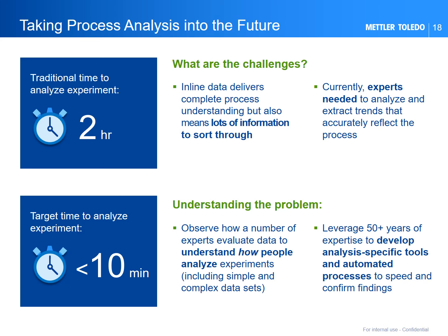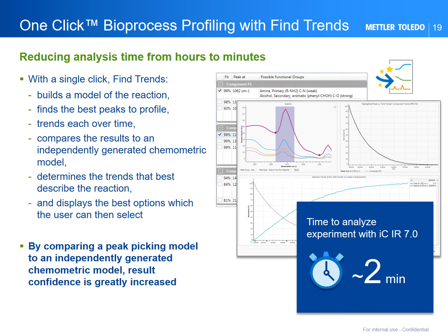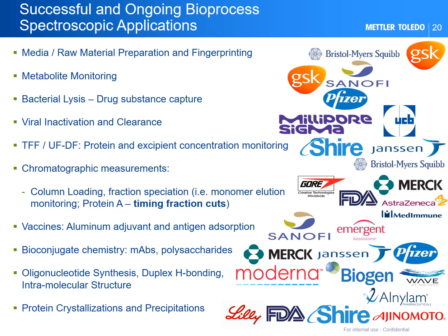In order to address the needs around efficient data analysis and reporting, Mettler Toledo observed a number of subject matter experts as they evaluated their data, leveraging that expertise to develop analysis-specific tools and automated processes. The Mettler Toledo React-IR mid-infrared FTIR and React-Raman spectroscopy software utilizes one-click profiling with Find Trends. This automated process takes the best practices workflow of an expert chemometrician and extracts the best peak profiles to trend the critical components of your unique process over time, bringing typical experimental evaluations to around two minutes without requiring subject matter expertise.